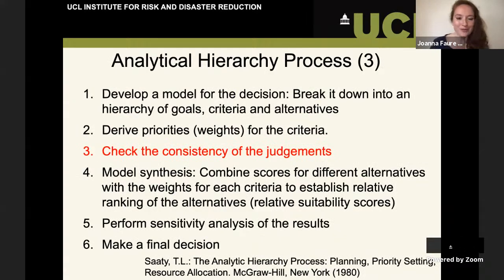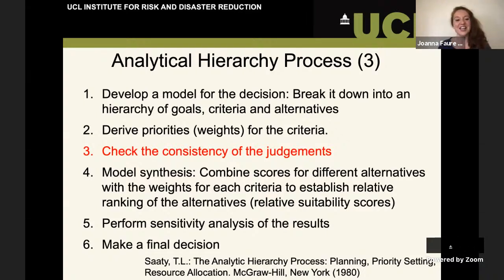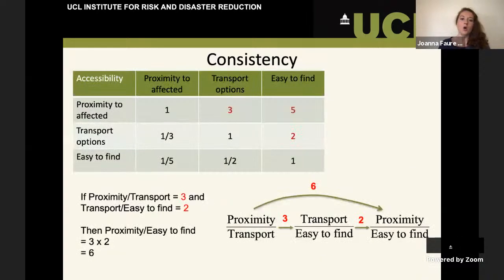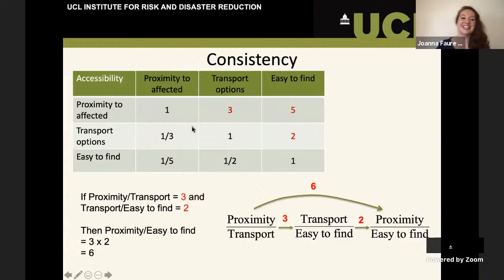So we've calculated our weights. Now we want to check the consistency of judgment. What do I mean by consistency? Let's take a look at the earlier example. We said that the proximity to the affected was three times more important than the transport options.